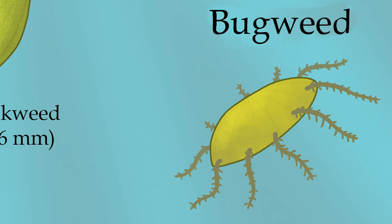Bugweed is the ancestor of all discofites with multicellular roots. Instead of using the collector cells' flagella as roots, the collector cells themselves are used to create fine branching structures which hang at the edges of the plant. While there are some small bugweed species which hang onto other discofites, most are large and fully floating, reaching up to 2 centimeters, and only use their roots for nutrient acquisition.